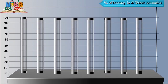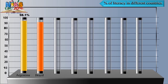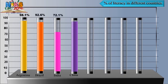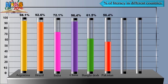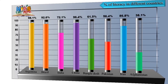Let's see the literacy rates of some countries: Argentina 98.1%, Brazil 92.6%, China 96.4%, Iran 86.8%, India 72.1%, Bangladesh 61.5%, Pakistan 56.4%, and Afghanistan 38.1%.